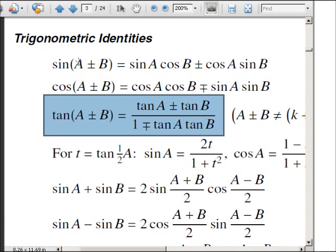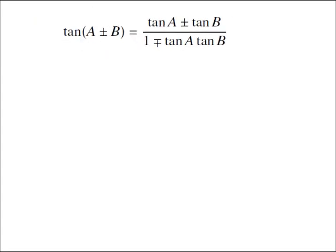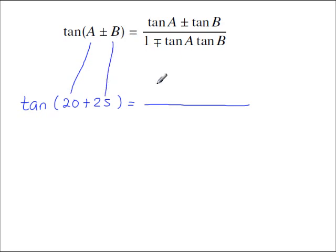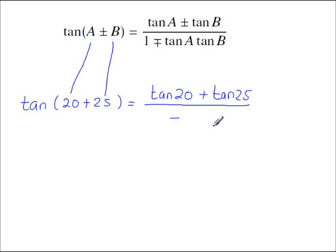The last of the three formulae from the formula book: tan A plus or minus B. For example, tan(20 + 25) — A is 20, B is 25 — gives tan 20 plus tan 25 on the numerator. The sign on top is plus, which goes with the minus in the denominator: 1 minus tan 20 times tan 25. This works in degrees or radians.